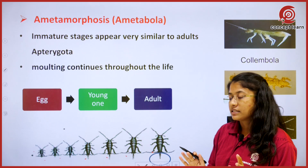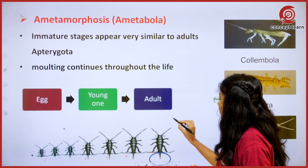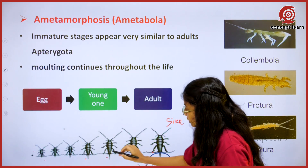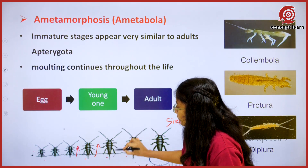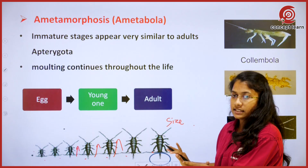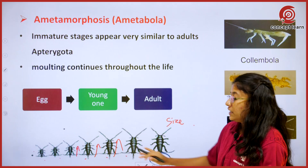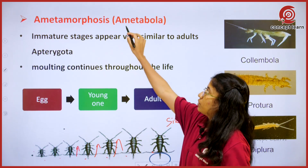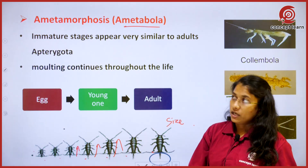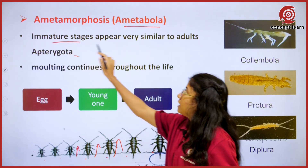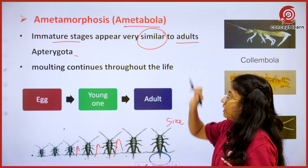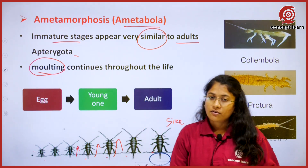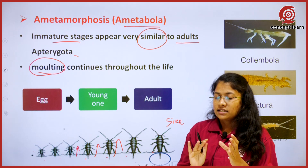The only difference is in terms of size — if you see, only the size is increasing, but every stage looks almost similar. If such kind of stages appear where they develop only in terms of size, those are known as Ametabola. So the immature stages are very much similar to that of the adults.